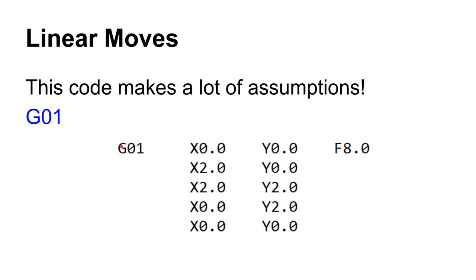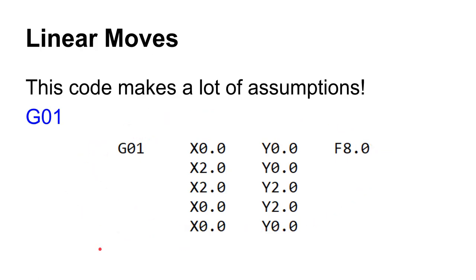If you just put a G01 block in the controller it might do what you expect — or it might do something completely different — because many settings are affected by whatever code last ran on the machine. You could run the same code on the same machine today and it works fine, then run it tomorrow and it crashes. The modal state of the controller matters.